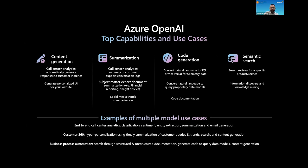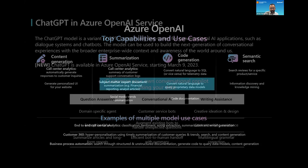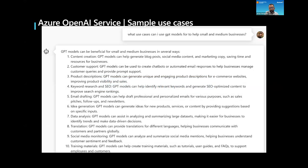I specifically wanted to know how these use cases apply in a small business context. Rather than a Google or Bing search, I decided to ask ChatGPT what it thinks about using these models for small businesses. Here is an actual copy-paste of me asking the GPT-4 model — the latest model within Azure — what use cases it recommends for helping small and medium businesses. It came up with ten things.